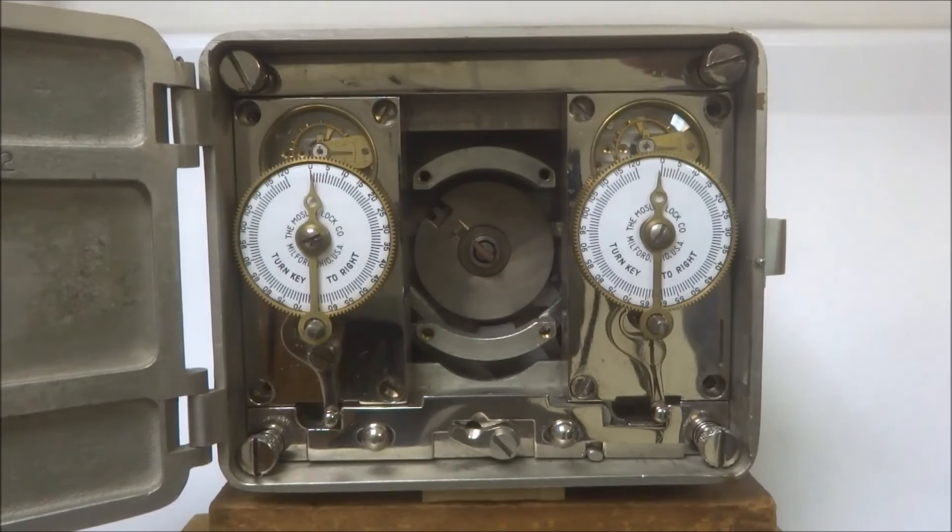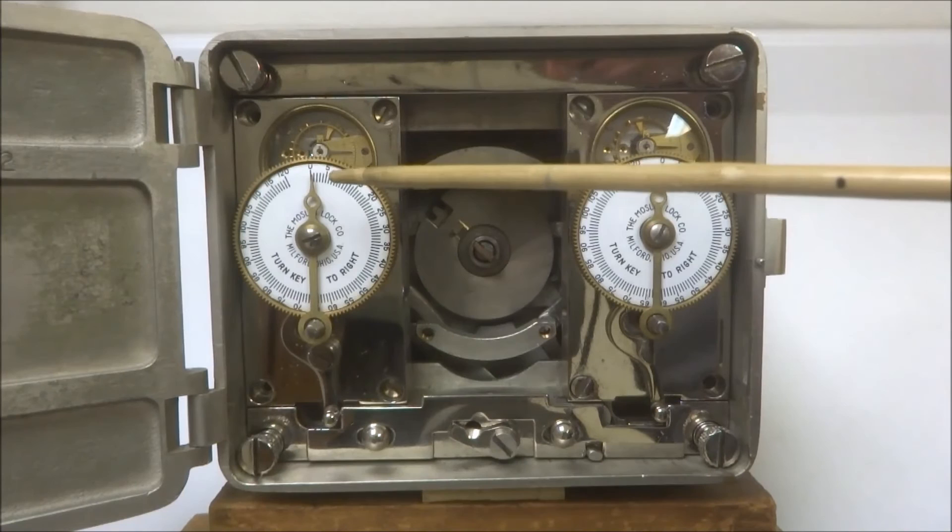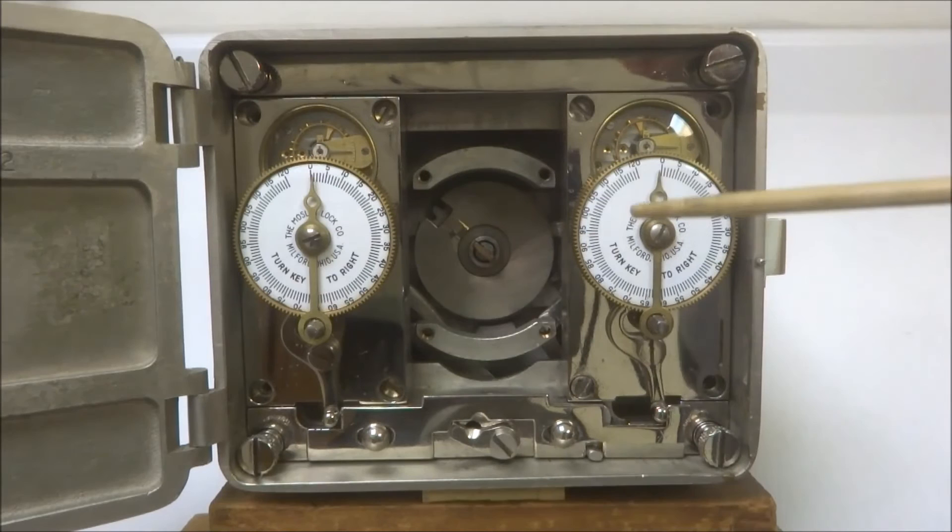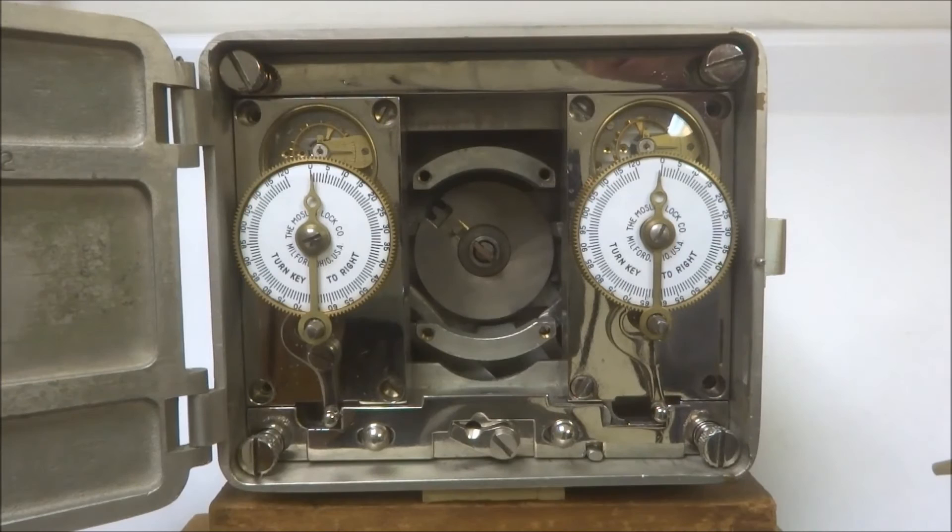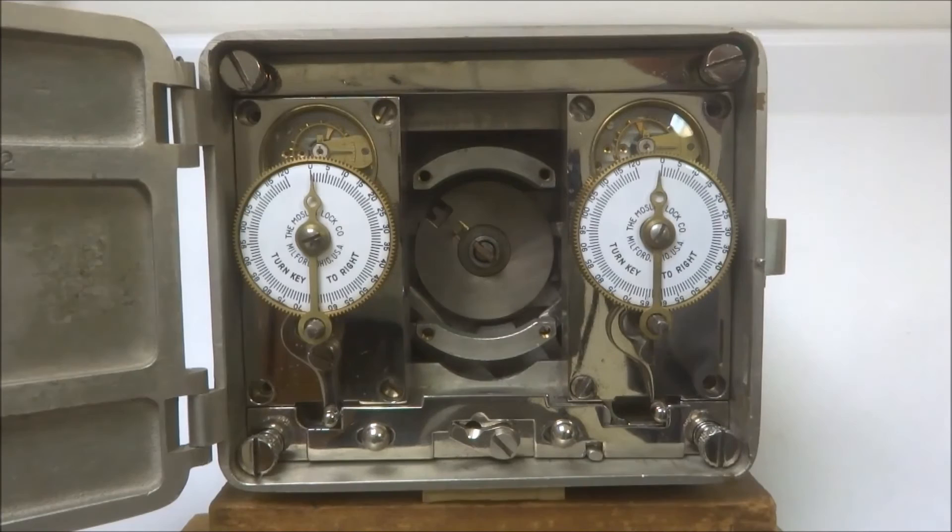Now let's say, for example, the owner wanted to have this safe locked for an indefinite period of time and there were other people who had the combination. Well, he could wind these time locks up to their maximum, which is 120 hours, but that's only going to give him five days of protection. So if he wanted to be away for longer than five days, this is what he would do. He would remove this safety pin, which goes in here, and then that would allow this to then move upward, blocking this snubber bar. So now the safe remains closed permanently.